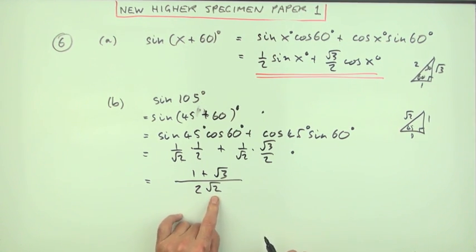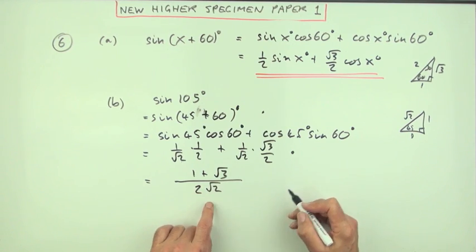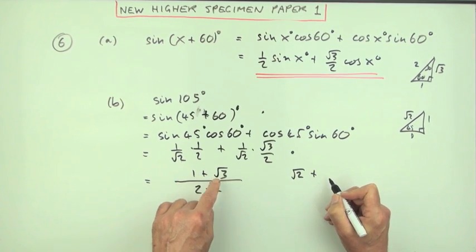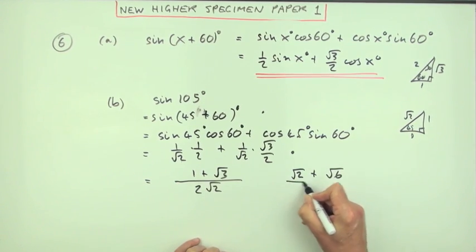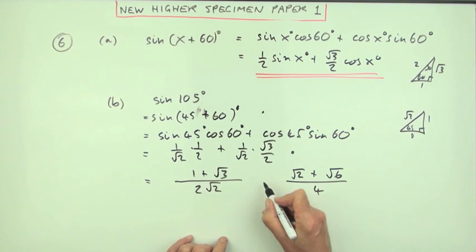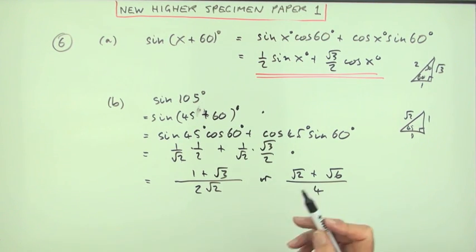But if it took my fancy to rationalize the denominator, it actually looks a wee bit worse because that means multiplying everything by root two. So that would be root two times one plus root two times root three is root six, and root two times root two is two times two makes four. Sadly, if it was paper two and you put that into your calculator, your calculator would give you this.